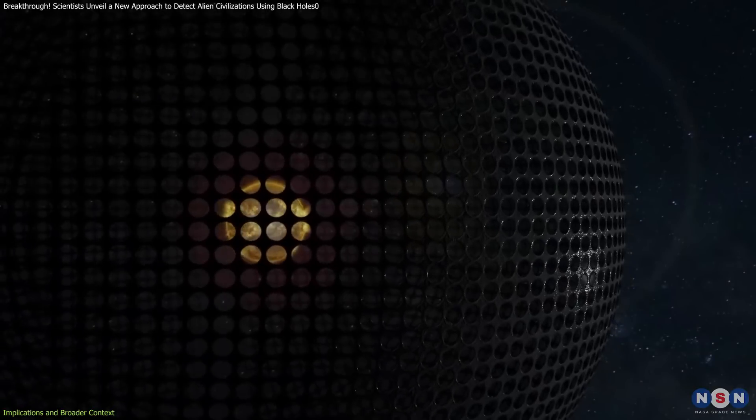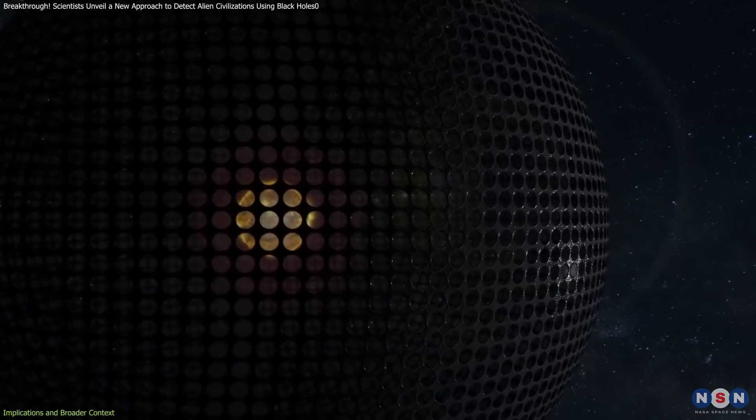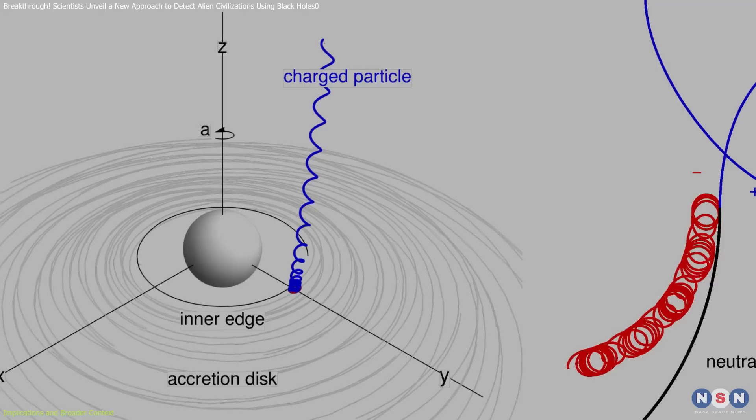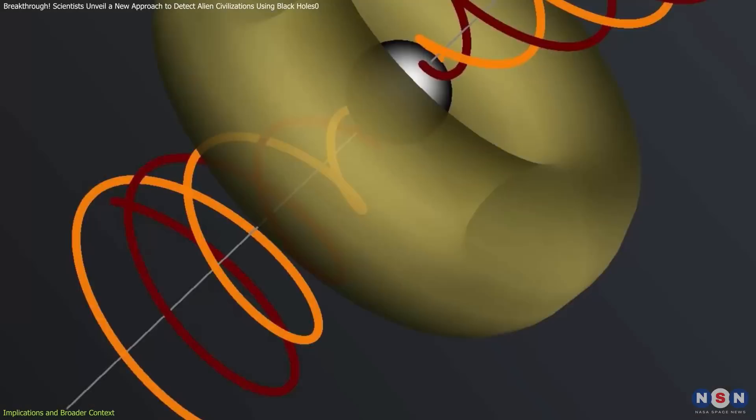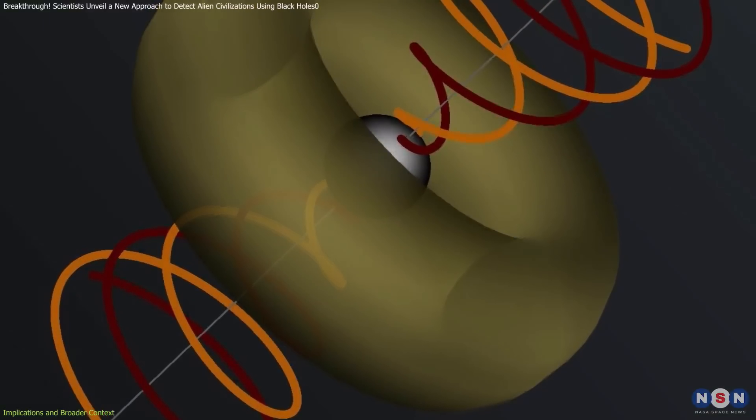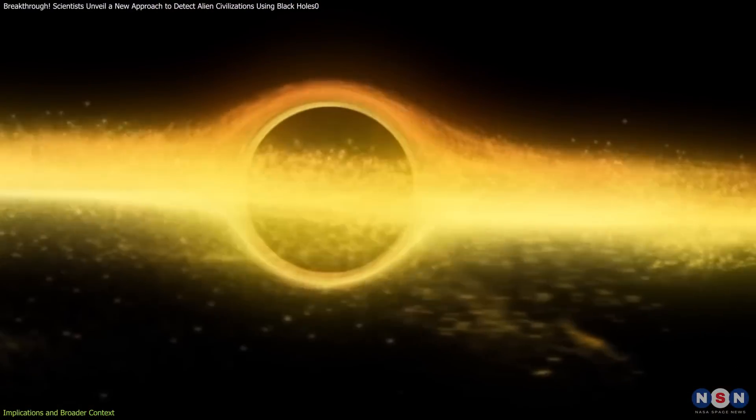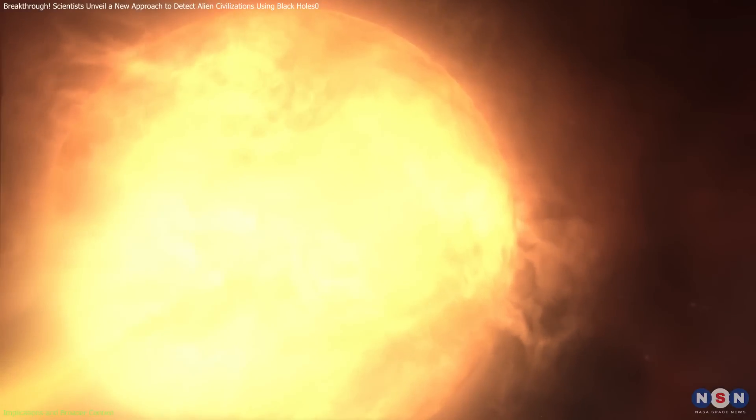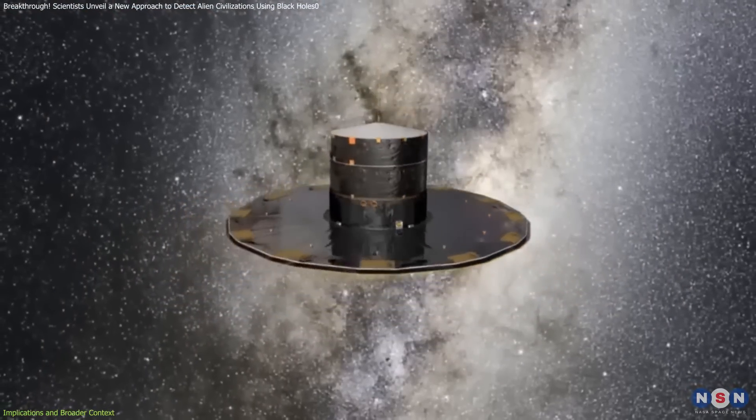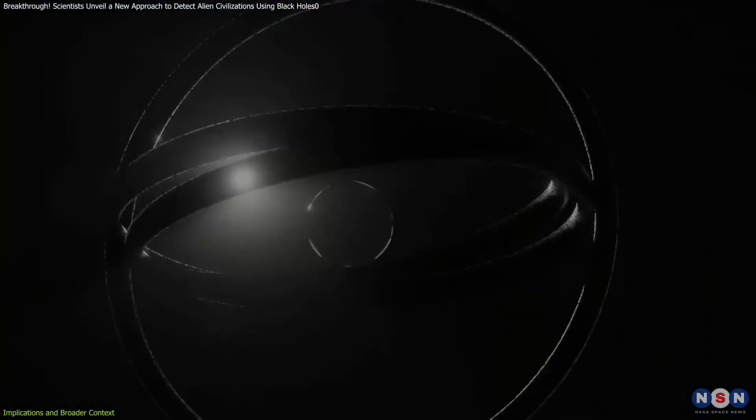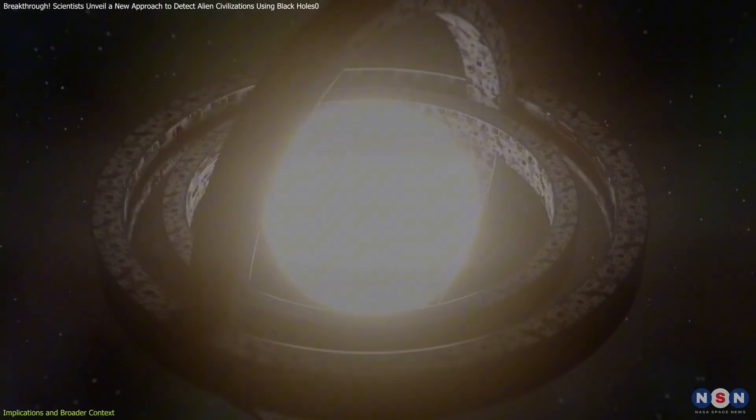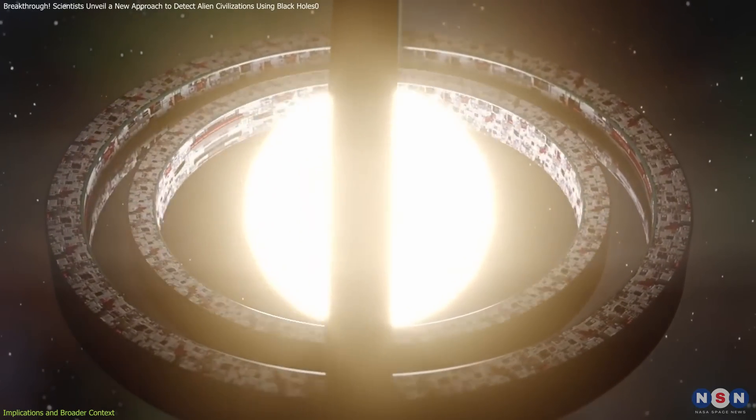Observing technosignatures from a Dyson sphere, such as waste heat or unusual radiation patterns, aligned with these processes could not only validate these theories, but also reveal unknown dynamics of energy manipulation near black holes. Observations of stars with infrared excess emissions, discovered through surveys like GAIA and WISE, have already hinted at possible artificial megastructures. While unconfirmed as technosignatures, these anomalies highlight the potential of this research direction.